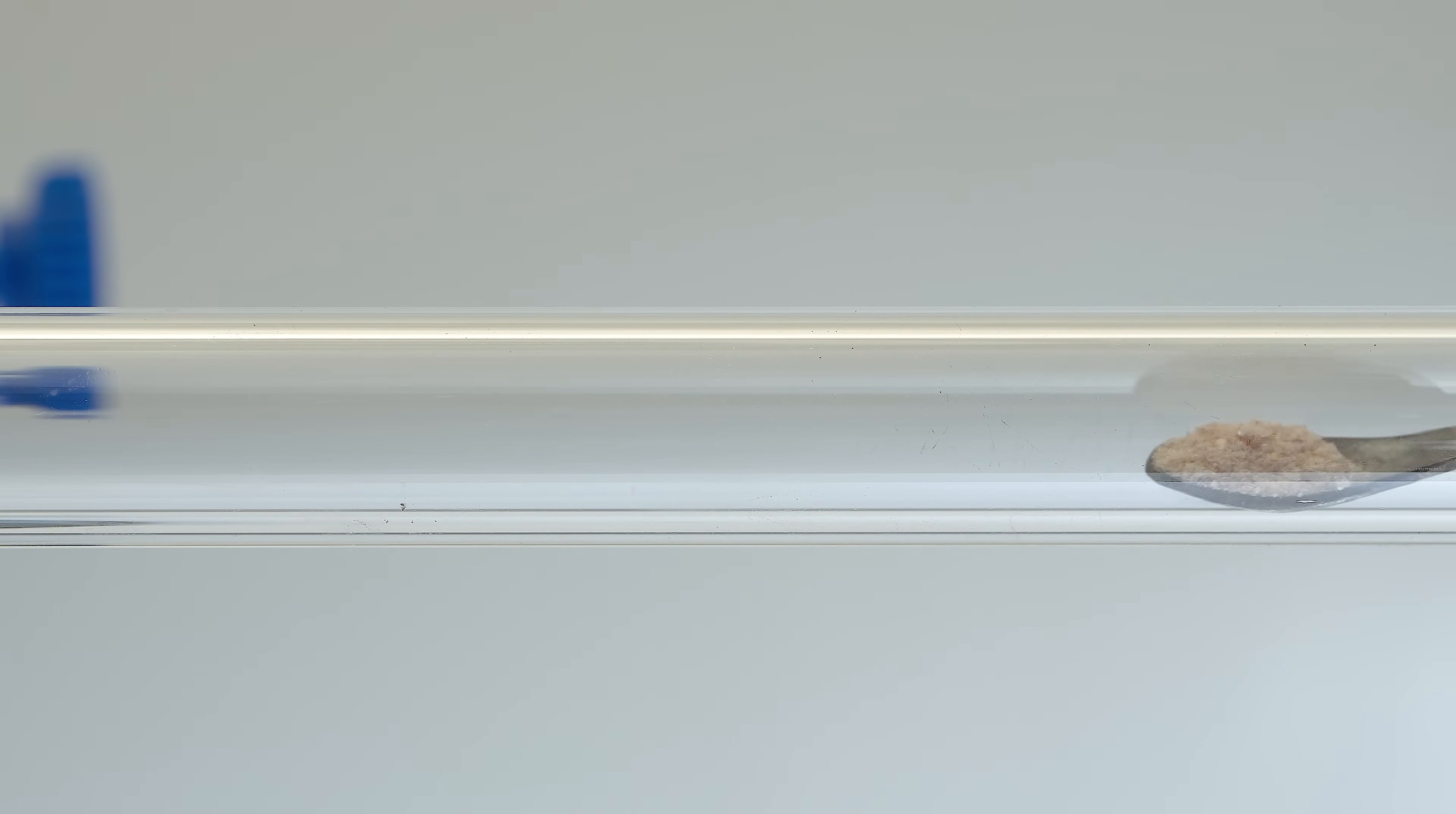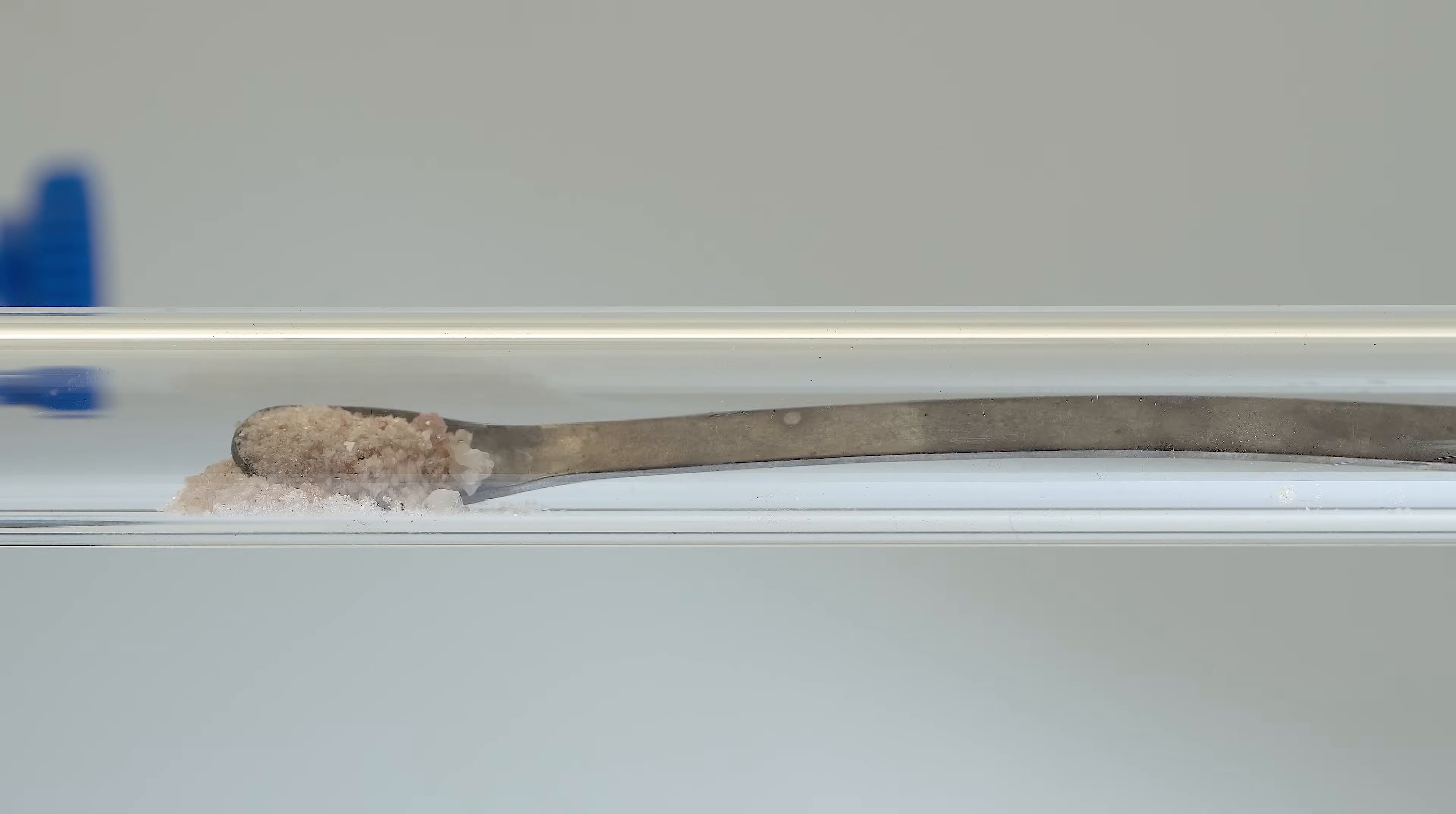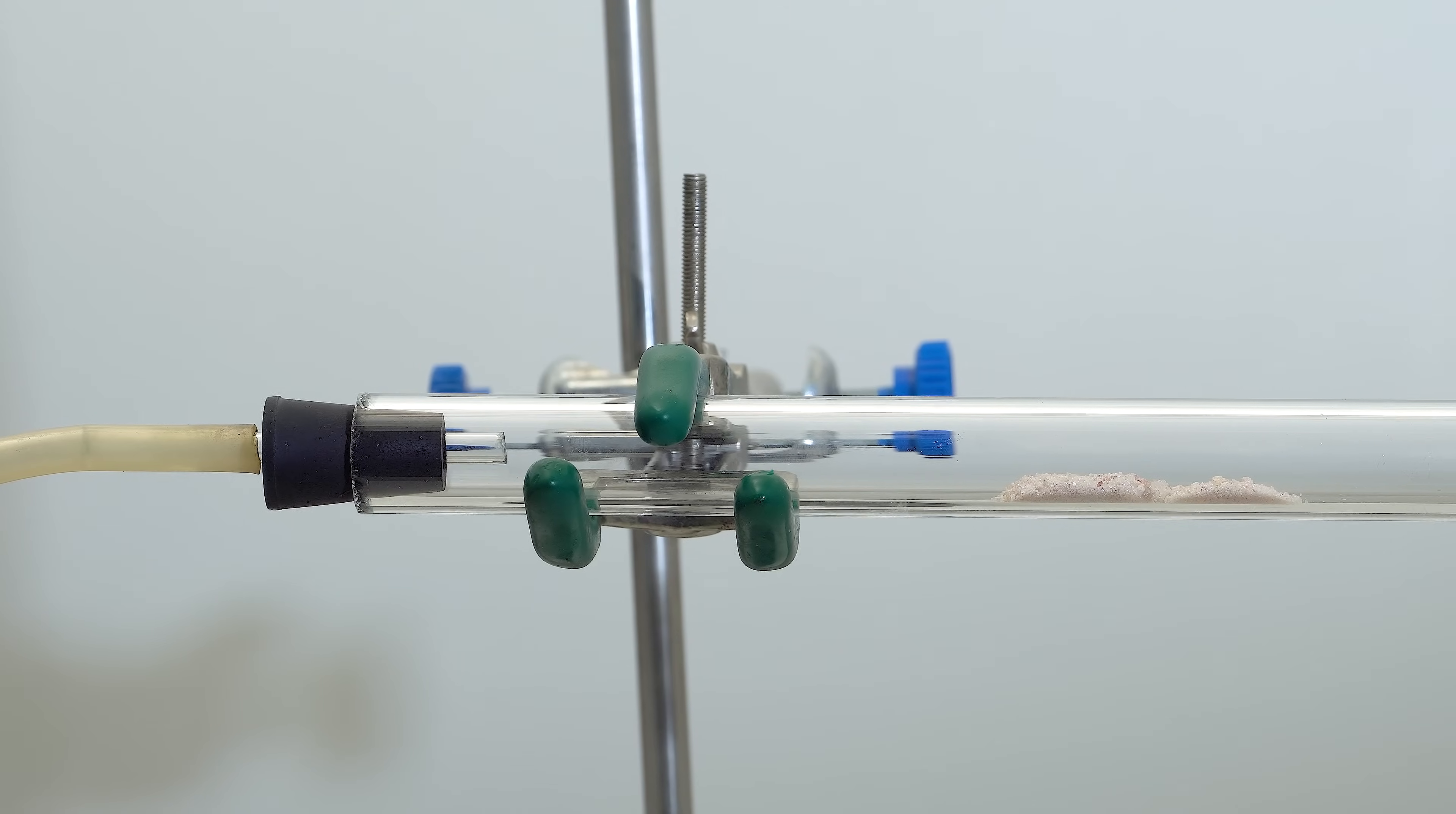The first reaction to obtain a tungsten mirror is the simplest. You just need to heat the tungsten hexacarbonyl in an inert gas atmosphere. Normally, tungsten hexacarbonyl appears as a white powder, but prolonged storage can cause it to take on a pink hue.